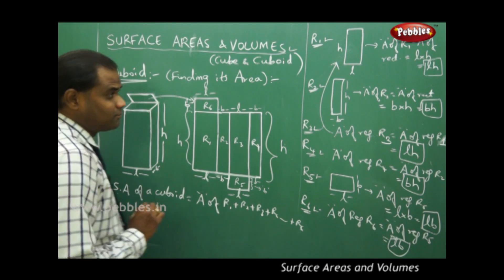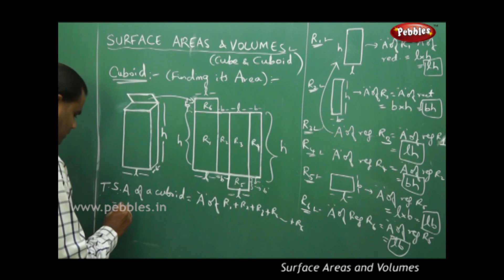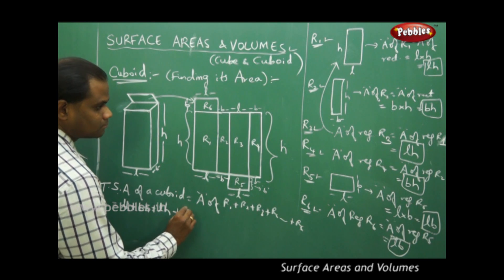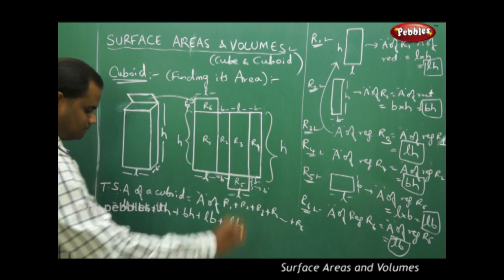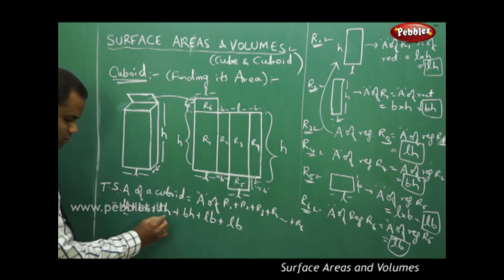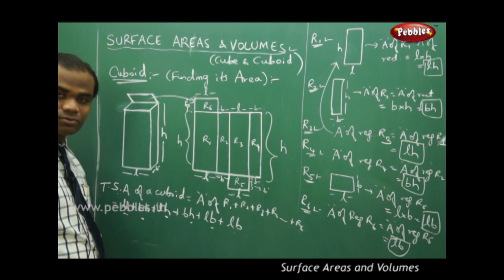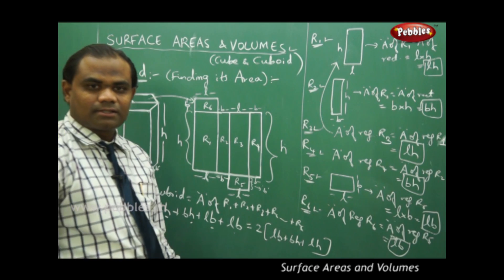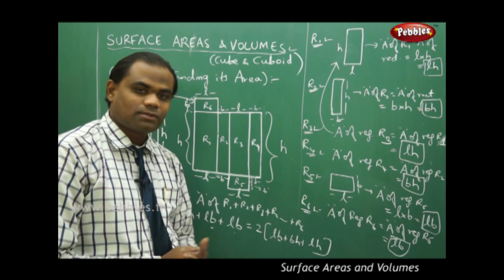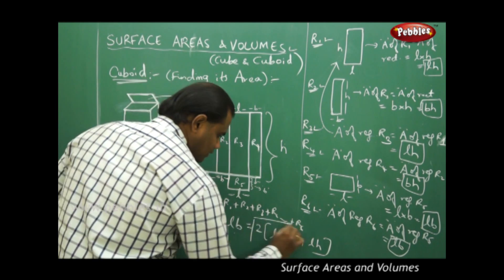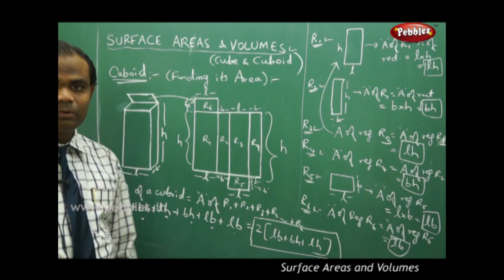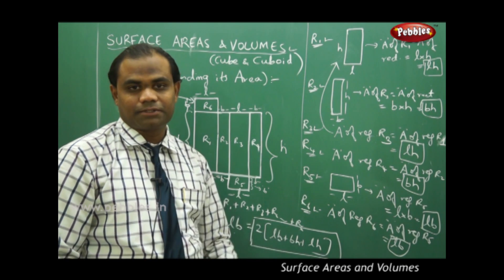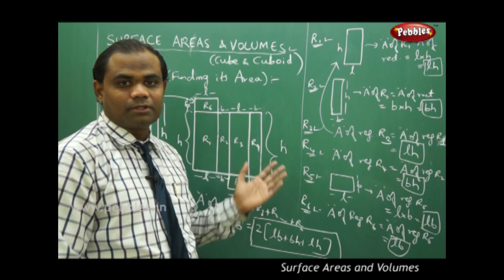Simplifying: LH + BH + LH + BH + LB + LB. Each of LH, BH, and LB appears twice, so I can write this as 2(LB + BH + LH). Therefore, the total surface area of a cuboid with length L, breadth B, and height H is given by the formula 2(LB + BH + LH).